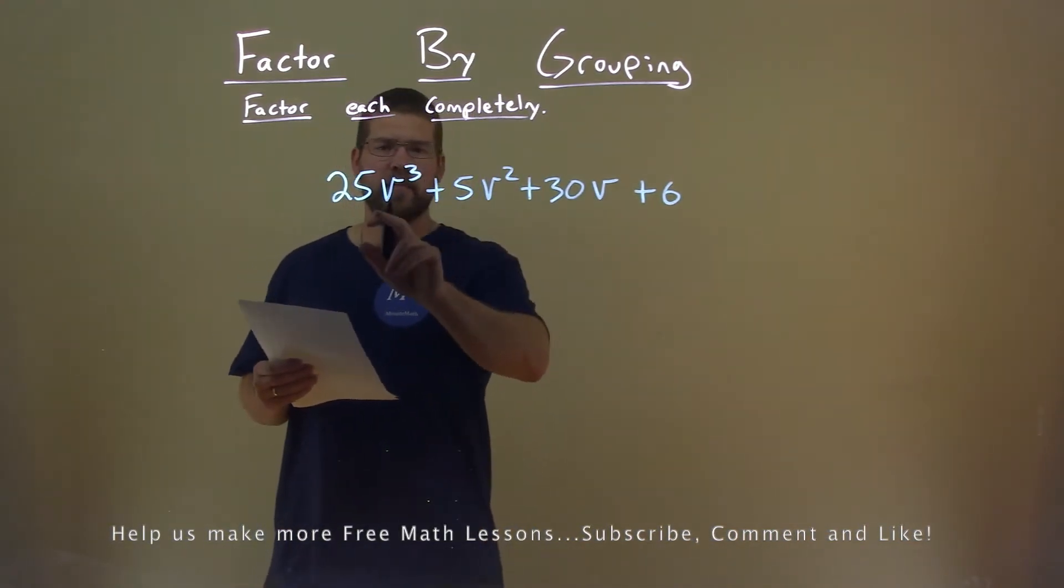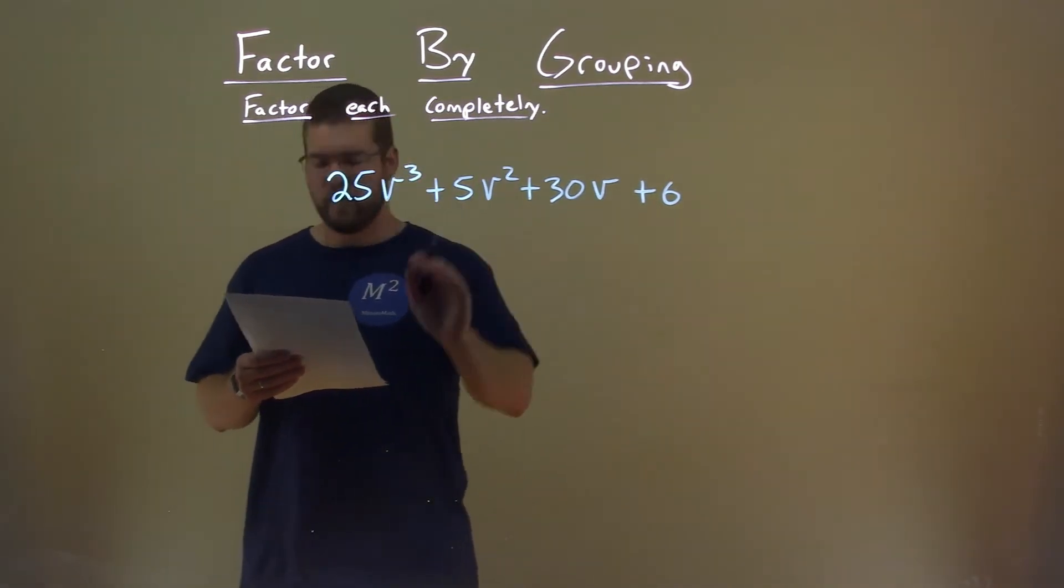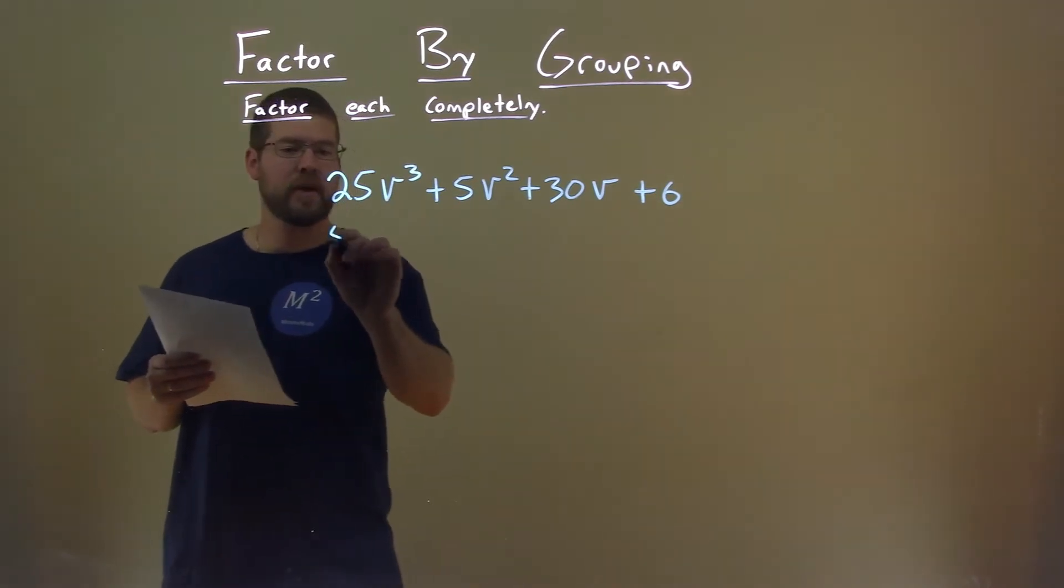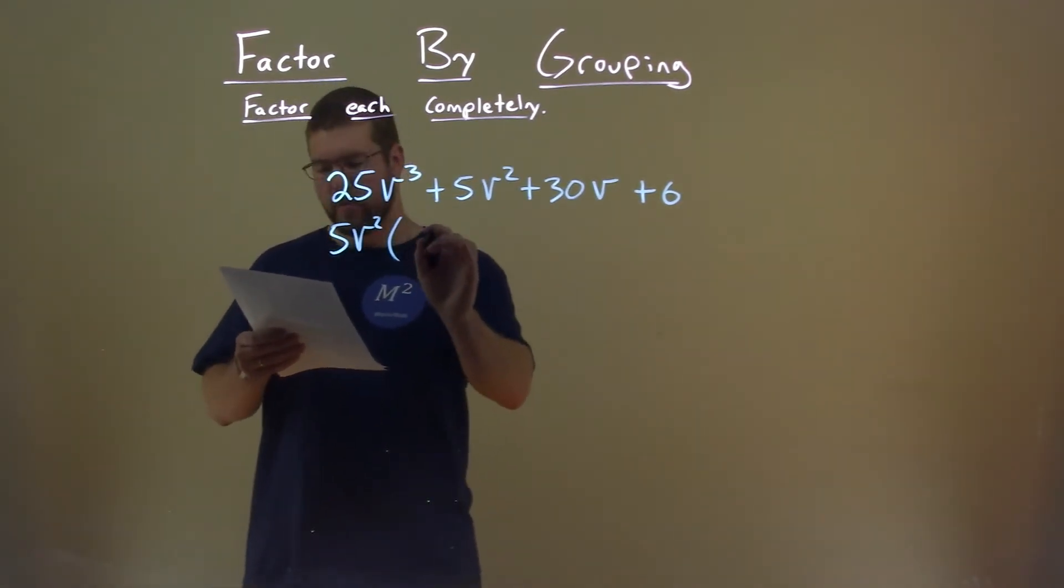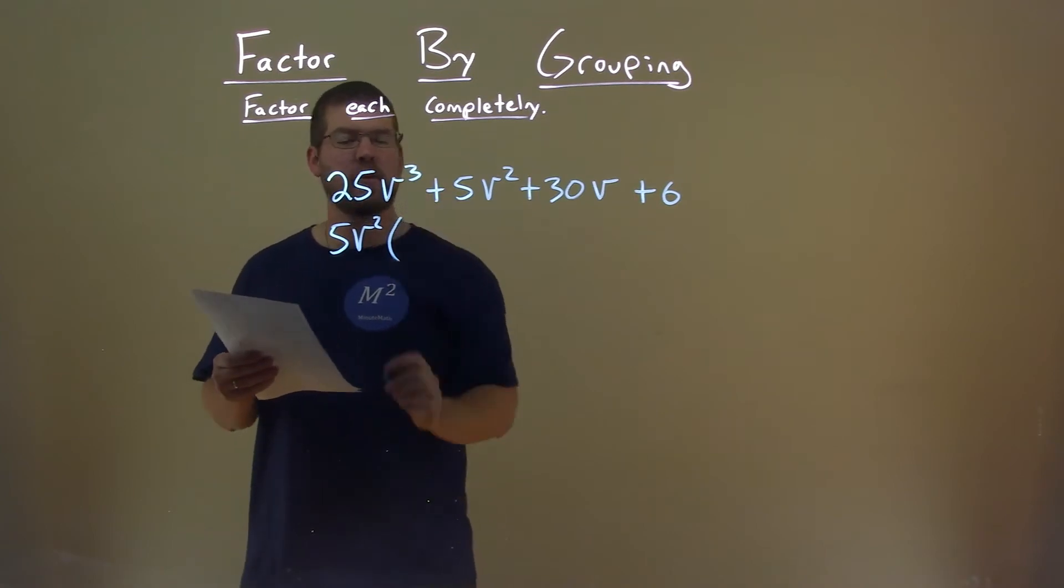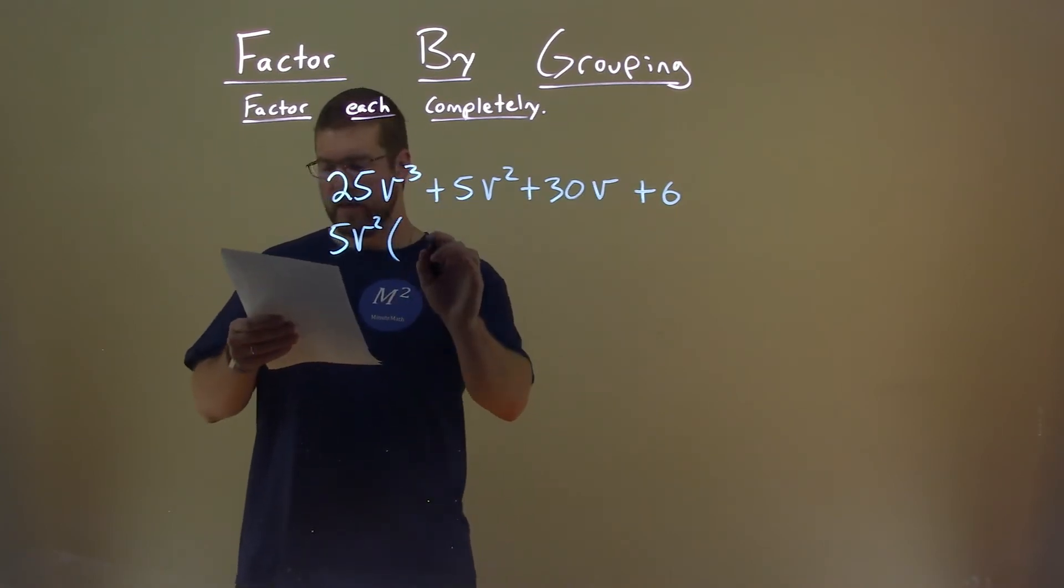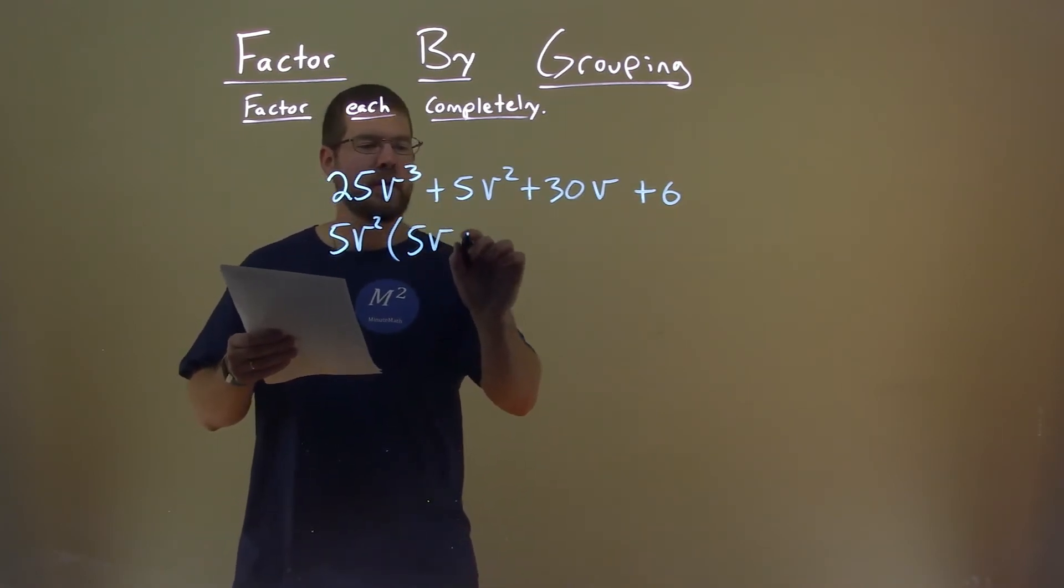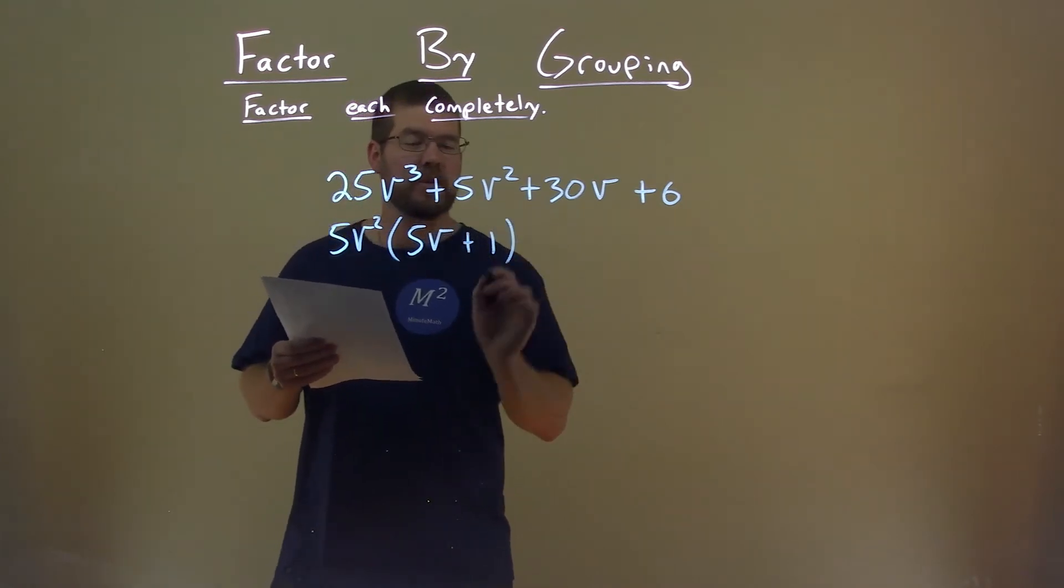The first part right here, I see that I can pull out a 5v squared from both parts. I pull out a 5v squared, and I'm left with, well, just 25v to the third power divided by 5v squared is just 5v. The second part, I'm left with just a 1.